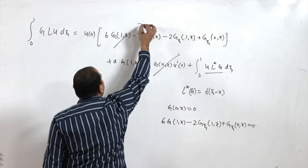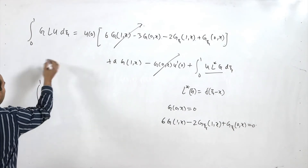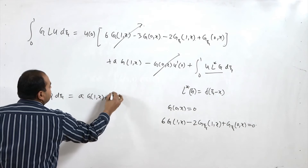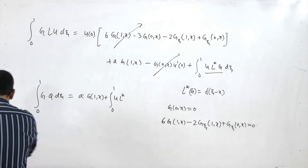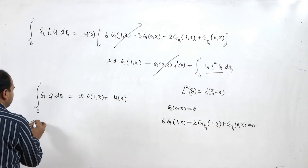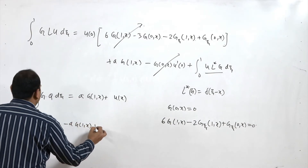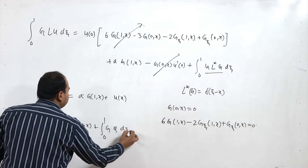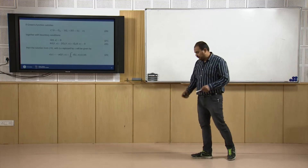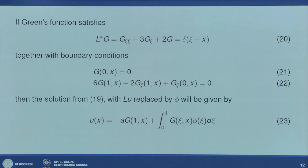With these assumptions, the terms vanish and we can write ∫₀¹ g·Lu dz = A·g(1,x) + ∫₀¹ u·L*g dz + ∫₀¹ g·φ dz. So our Green function must satisfy: L*g = g_ξξ − 3g_ξ + 2g = δ(ξ−x), along with boundary conditions g(0,x) = 0 and 6g(1,x) − 2g_ξ(1,x) + g_ξ(0,x) = 0.